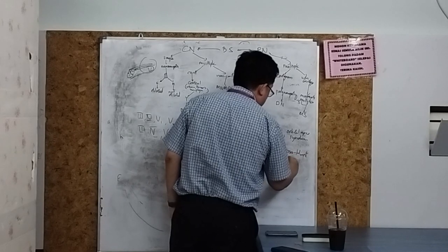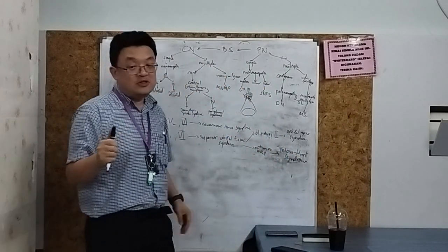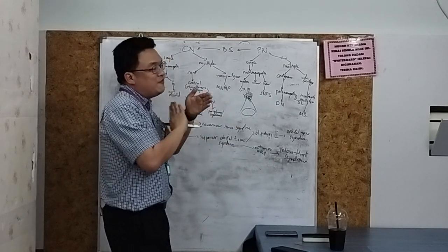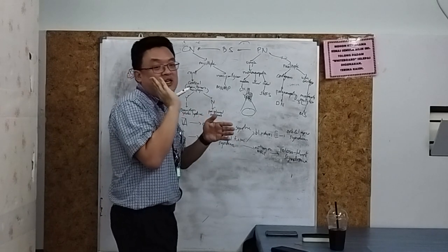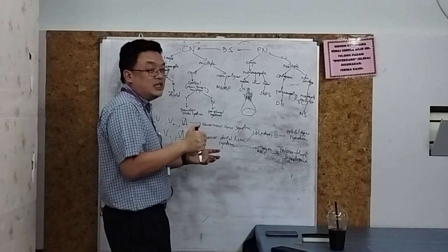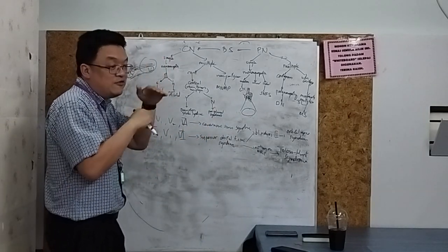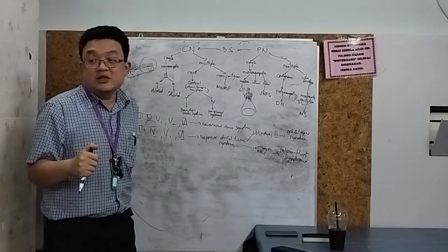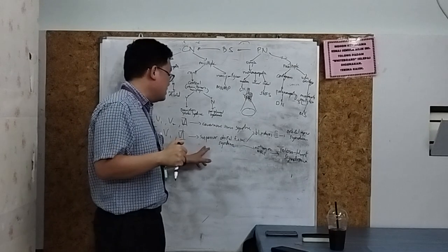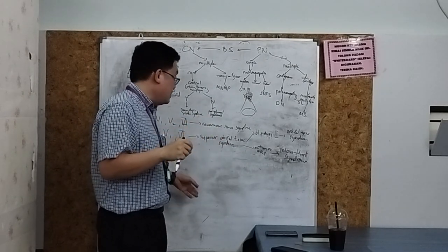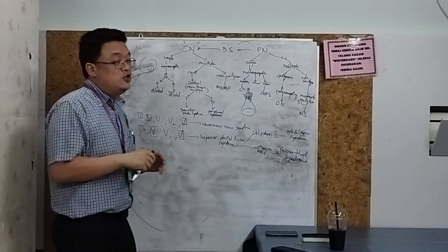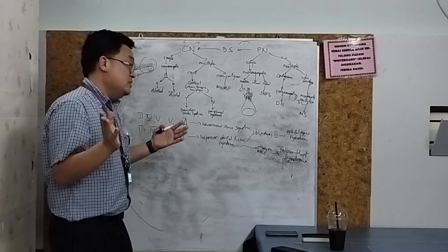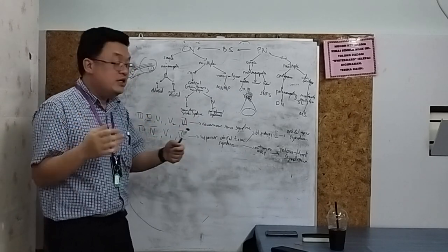Tolosa-Hunt syndrome is diagnosed when you scan the MRI and find nothing in the orbit. A syndrome is defined by demonstrating the same signs — so whether it's a fracture, metastasis, TB, meningioma, or granulomatous lesion sitting at the superior orbital fissure, the clinical presentation is a superior orbital fissure syndrome regardless of cause.